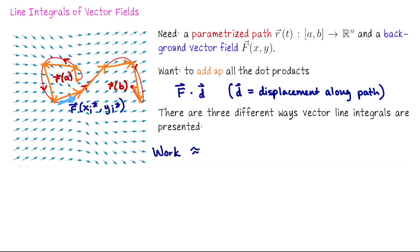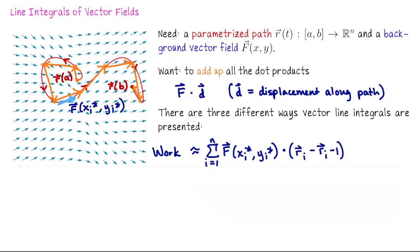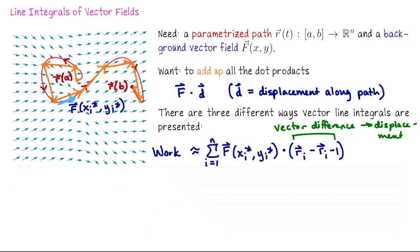We can say the work is approximately the sum from i equals one through the number of slices of F evaluated at the representative point dot the displacement — drawn here as the orange vectors. The displacement goes from the beginning of the segment to the end, so we do endpoint minus beginning point: r_i minus r_{i-1}. So r_1 minus r_0, r_2 minus r_1, r_3 minus r_2, etc. This vector difference gives us a displacement vector, which we denote delta-r, where r has a vector symbol because we're talking about a difference along this parametrized path.